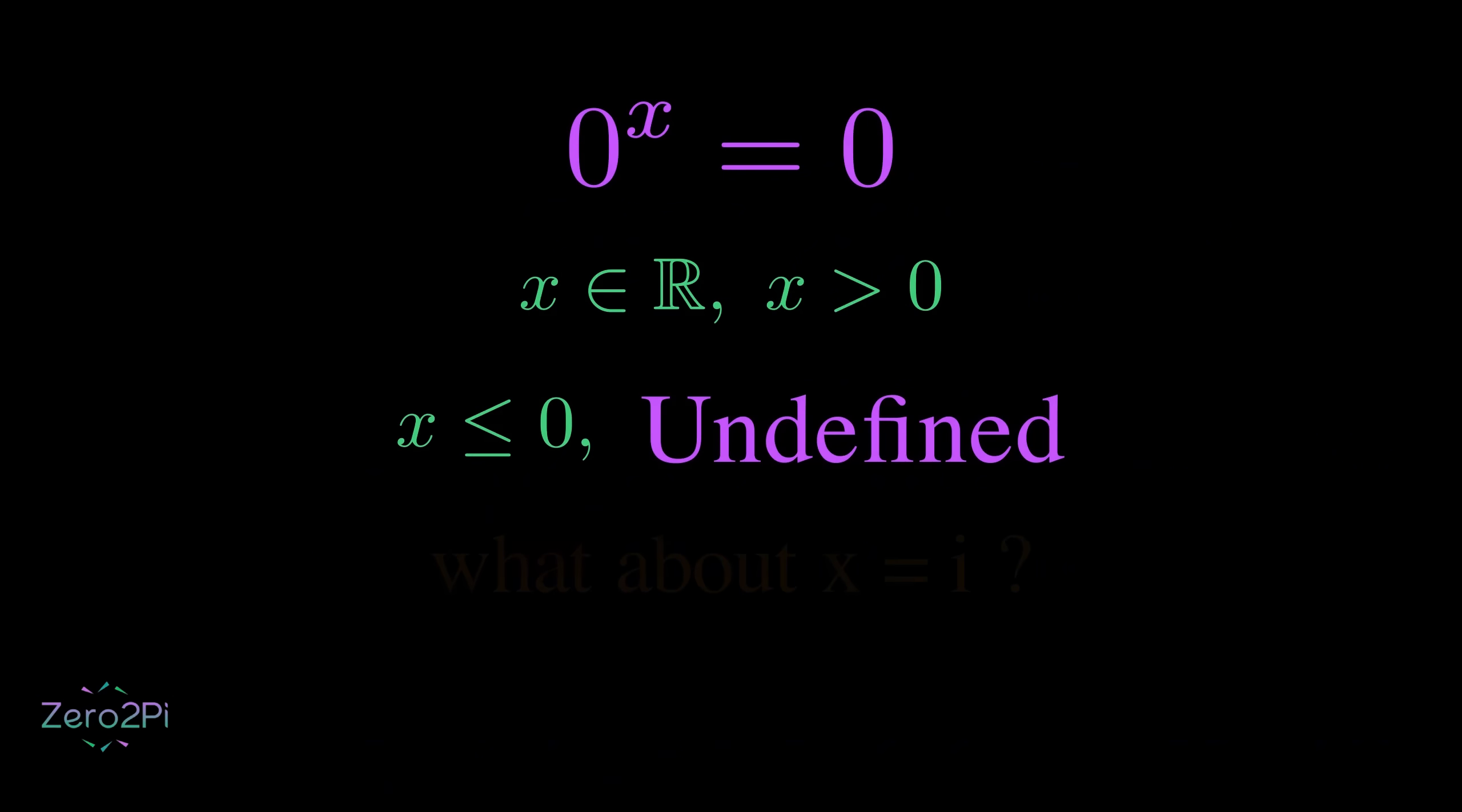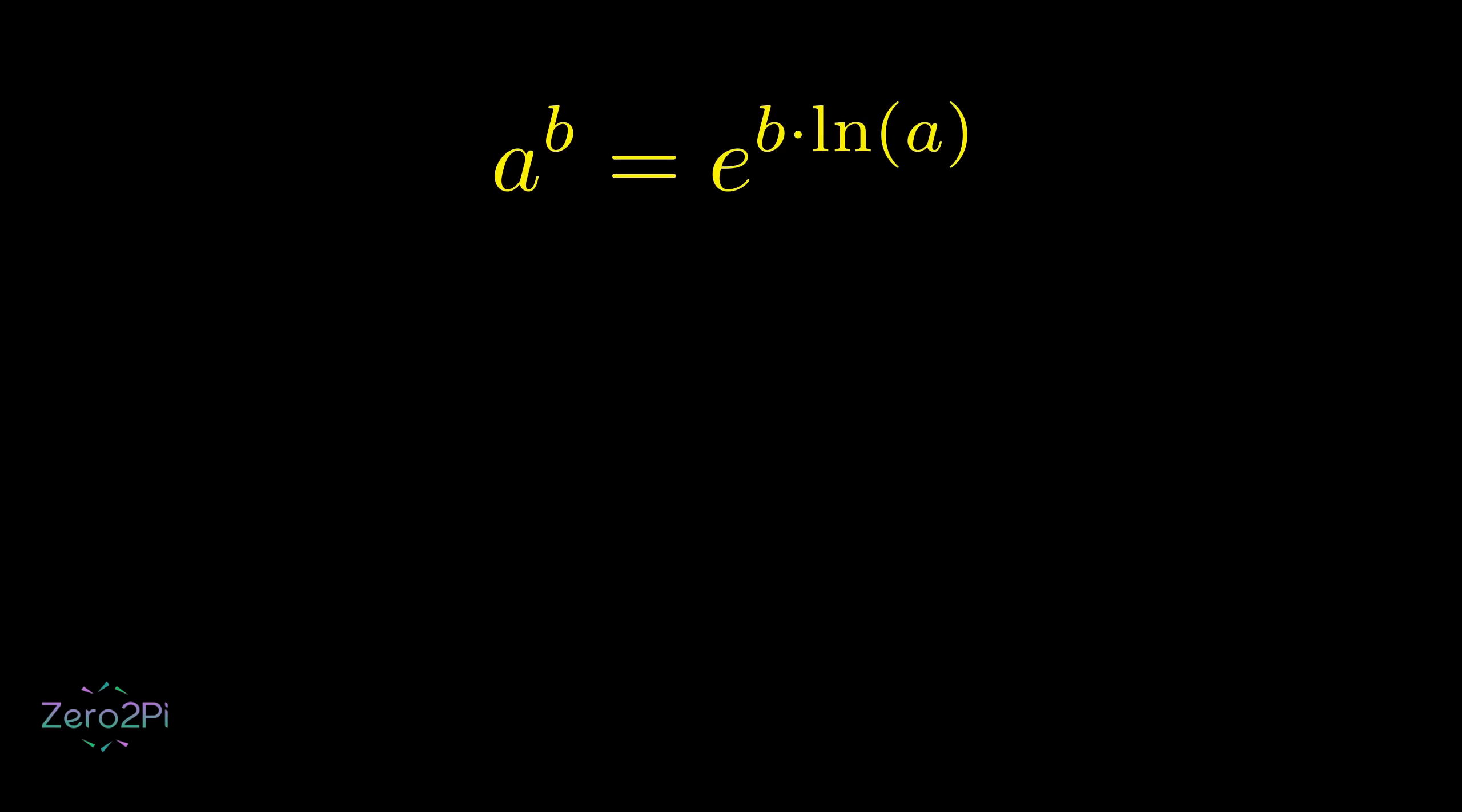But what about iota then? It's not a real number. And when exponents get tricky like this, then we use this formula, which is known as exponential form of a power. When we apply this, x to the power i becomes e raised to the power of i natural log of x.